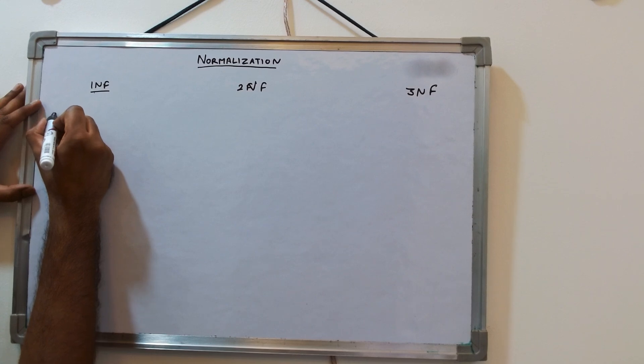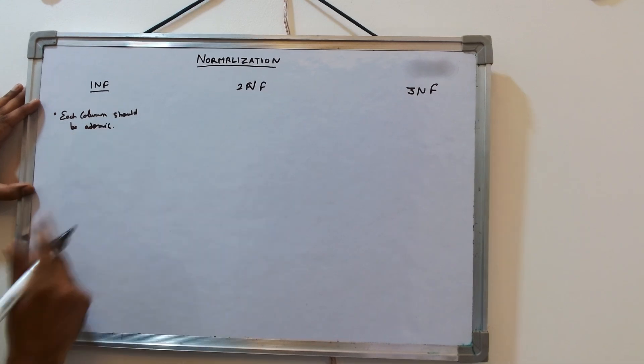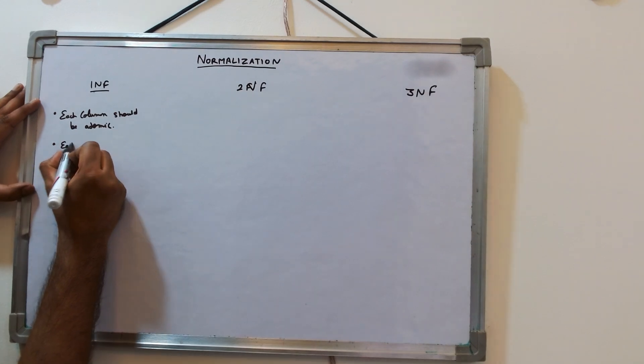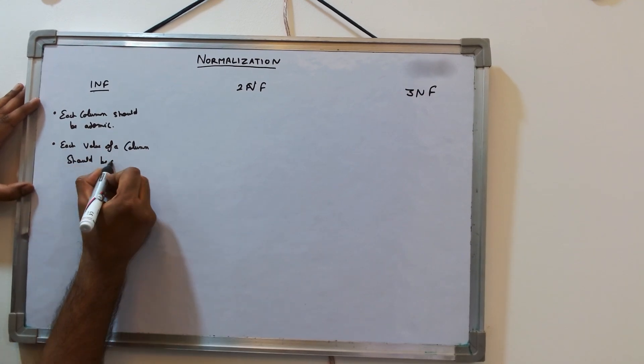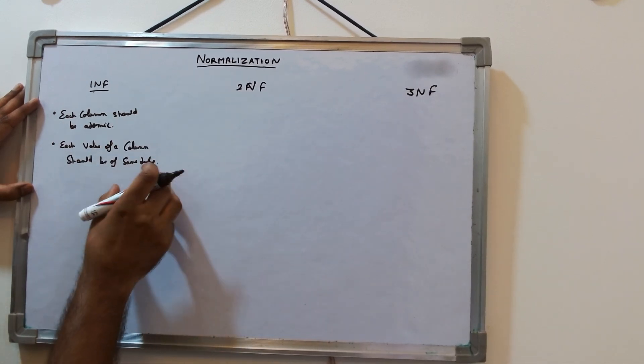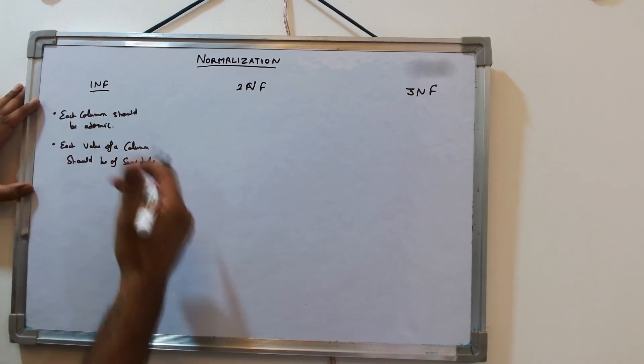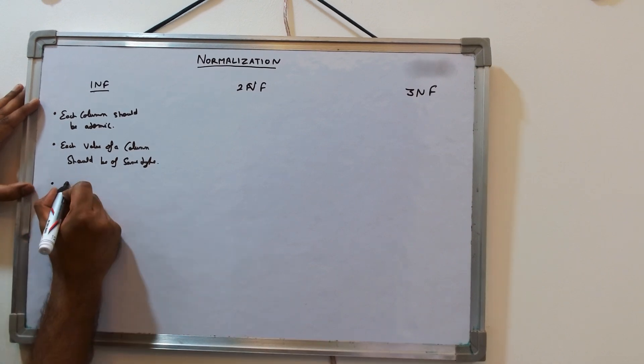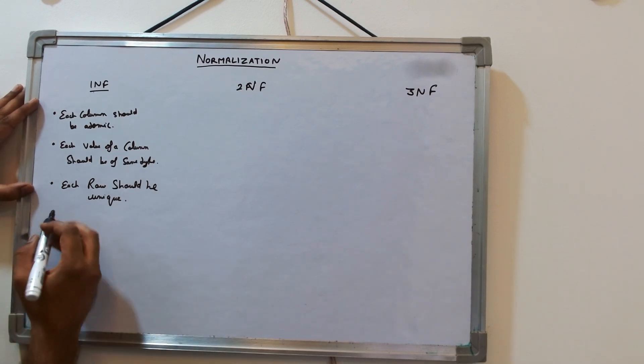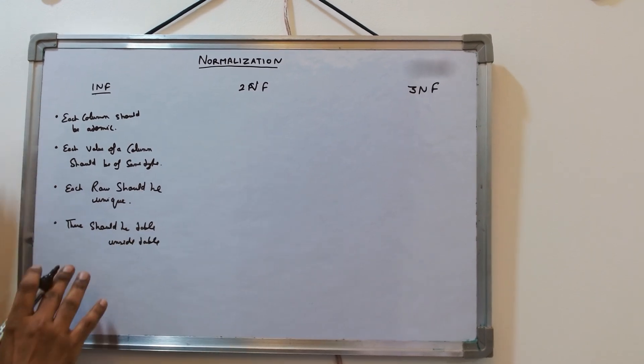What does 1NF say? 1NF says that each column should be atomic, meaning each column should have one value with the same data type. Each row should be unique, which means each row should have one primary key. There should not be table inside table.